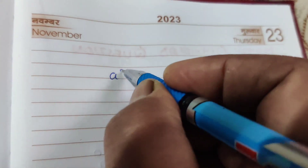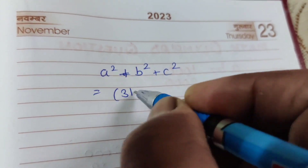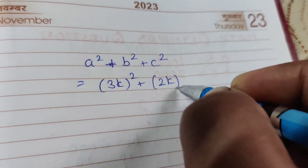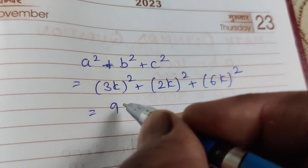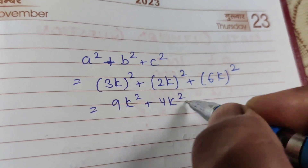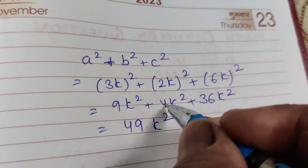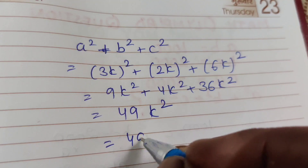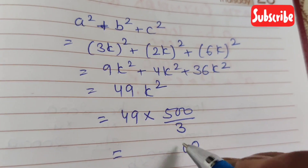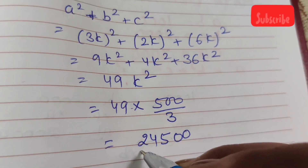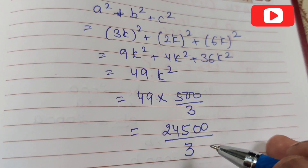We need to find A squared plus B squared plus C squared. A squared equals (3K)² = 9K². B squared equals (2K)² = 4K². C squared equals (6K)² = 36K². Adding all together: 9K² + 4K² + 36K² = 49K². Now substituting K² equal to 500 by 3, we get 49 times 500 by 3, which equals 24,500 by 3. So the value of A squared plus B squared plus C squared is 24,500 by 3.